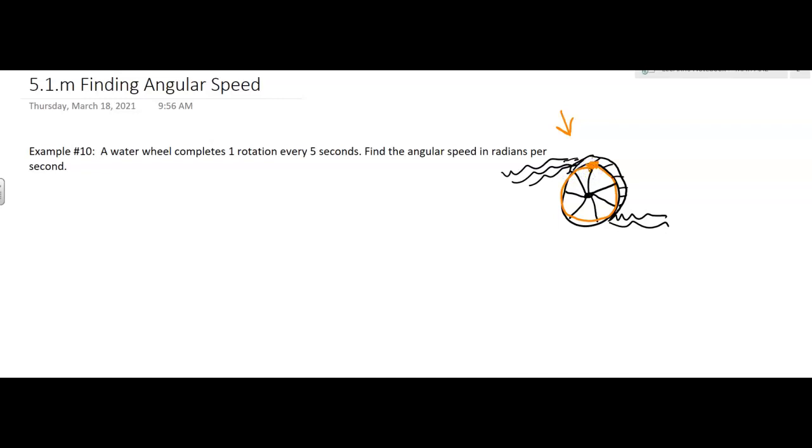So angular speed - it says find the angular speed. Angular speed is θ over time, and they want it in radians per second.